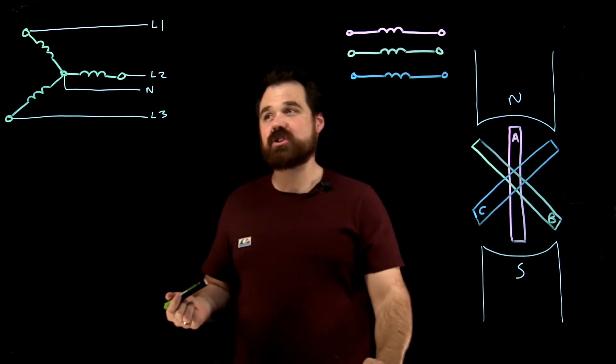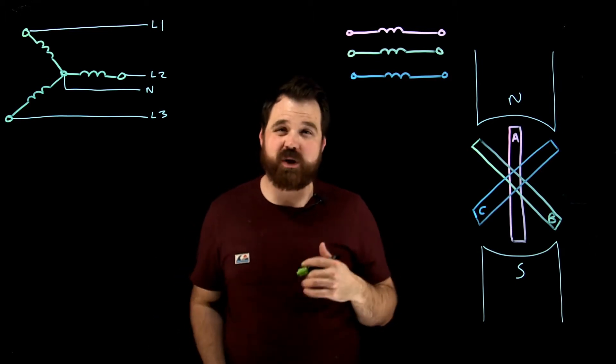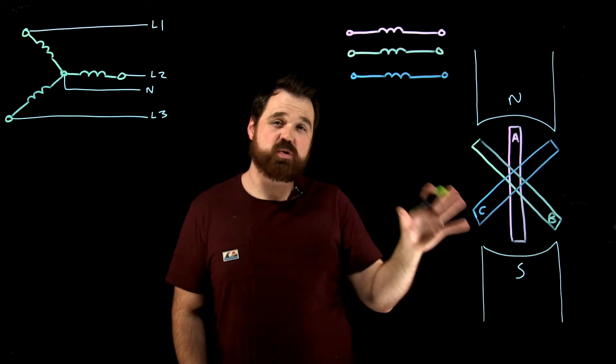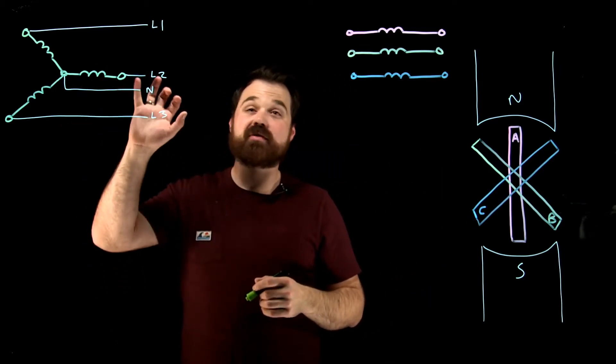So now there's a benefit of this source. The benefit of this source, let's use 120 volts for this generator. So let's say this generator generates 120 volts per phase.